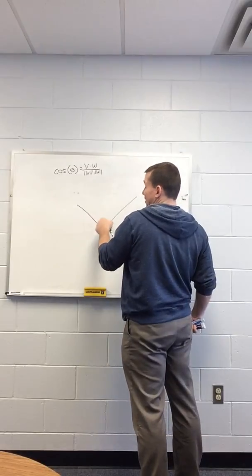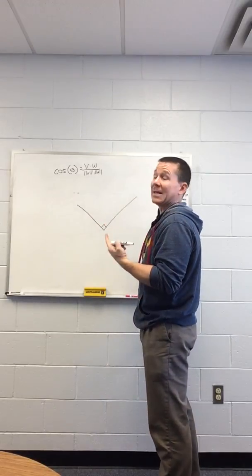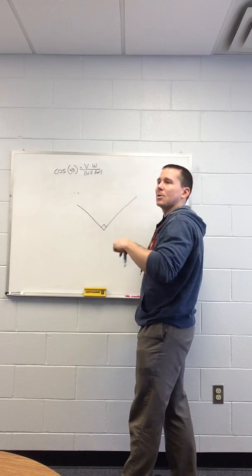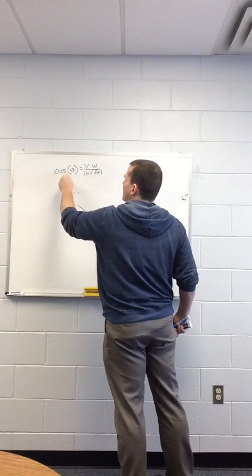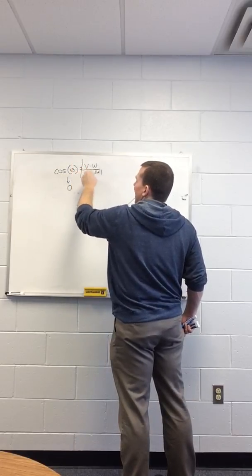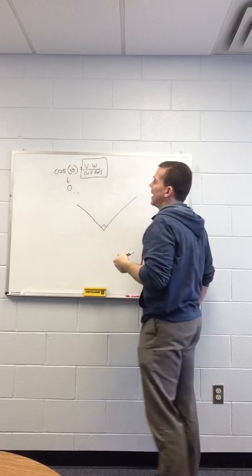If the angle between the vectors is a right angle, that's a 90 degree angle, then what's cosine of 90? Well, cosine of 90 equals zero. Which means if the angle between them is 90 degrees, this has to be zero.